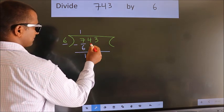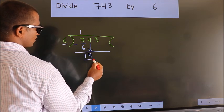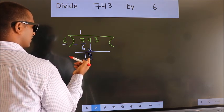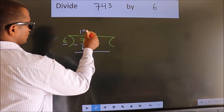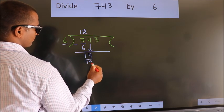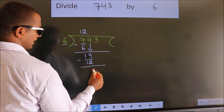After this, bring down the beside number. So, 4 down. So, 14. A number close to 14 in 6 table is 6 times 2 is 12. Now, we subtract. We get 2.